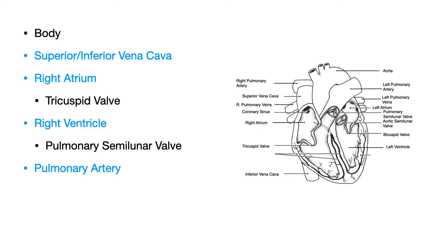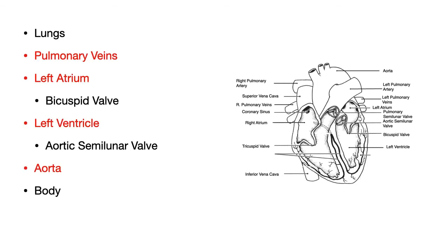So the right atrium goes through the tricuspid valve into the right ventricle. Then the right ventricle moves through the pulmonary semilunar valve to the pulmonary artery — here's an example of an artery with deoxygenated blood. From the pulmonary artery, blood goes to the lungs, where it receives oxygen. Once it receives oxygen, it comes via the pulmonary veins — veins with oxygenated blood — into the left atrium, the left receiving chamber.